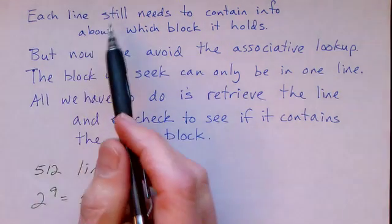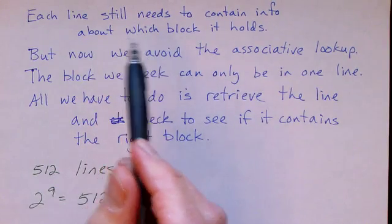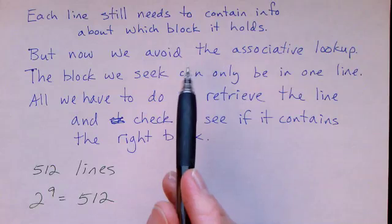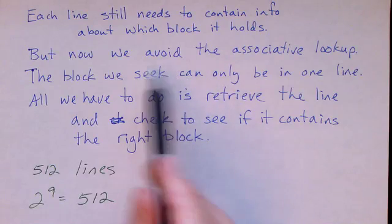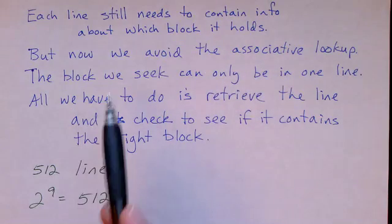So, just as with a fully associative cache, each line still needs to contain information about which block is currently being stored in that line. But with a direct map cache, we now can avoid the associative lookup.